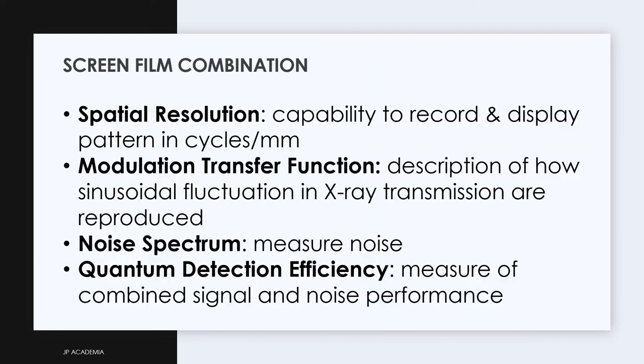Now we have the following used to quantify the image quality of a screen-film combination. First is spatial resolution which refers to the ability of the screen-film imaging system to differentiate between two nearby objects. This is done by recording and displaying patterns showing in cycles per millimeter.